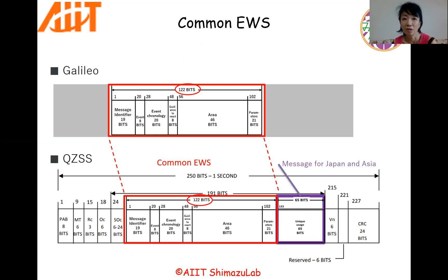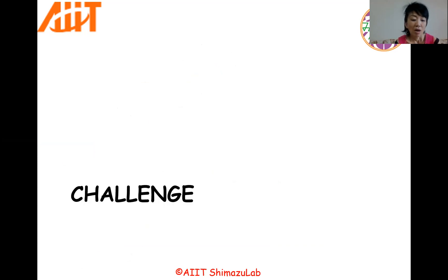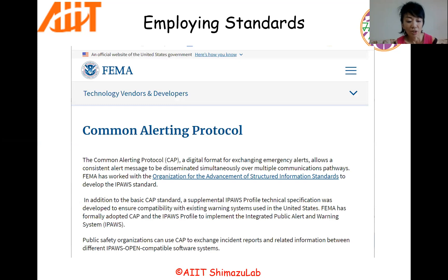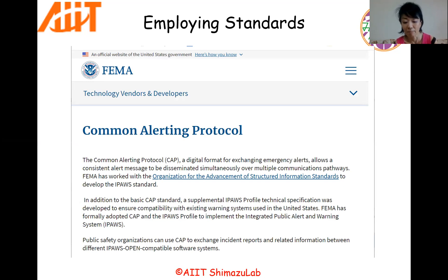The red part is Common EWS message. Our biggest challenge for designing Common EWS is how to put complicated information about disaster. It has not only disaster types, but also CBNS, occurrence time, evacuation rate, and so on. We employ the international standard for solving this problem. Common EWS protocol called CAP is one of them. We use this standard for appropriate design of disaster type information structure.